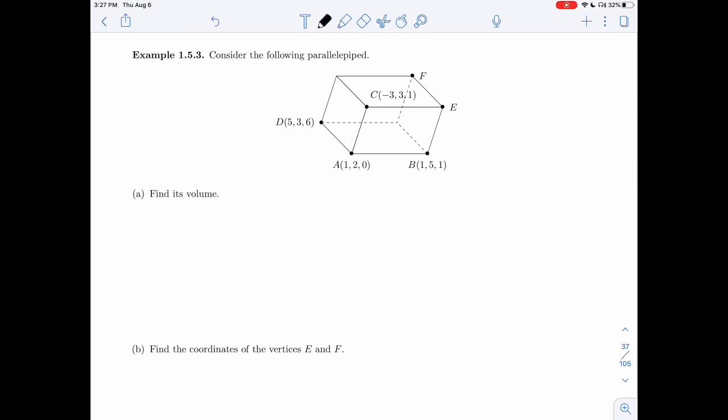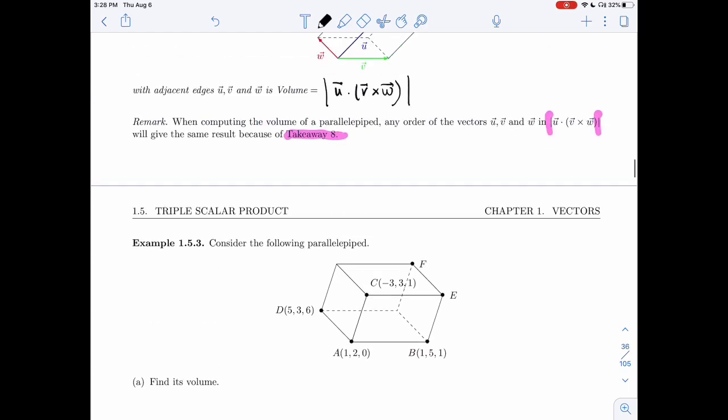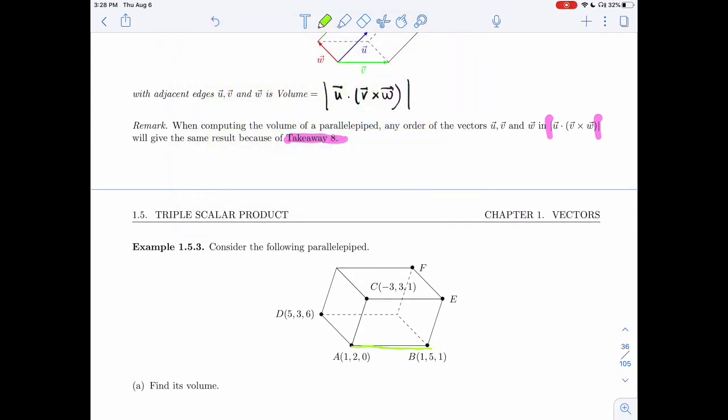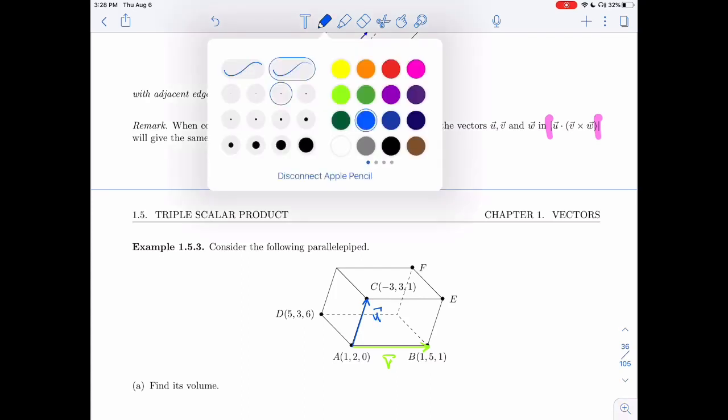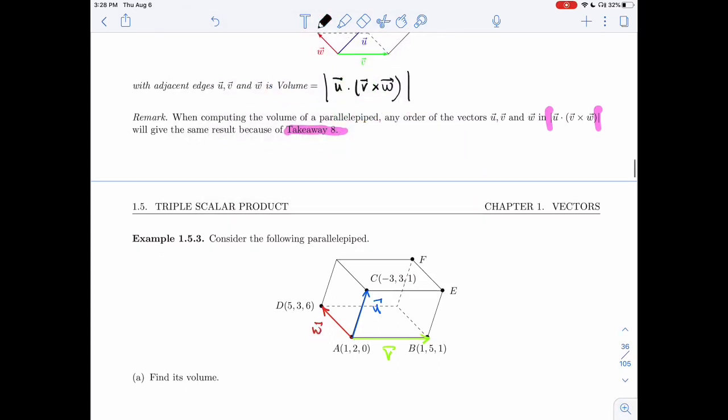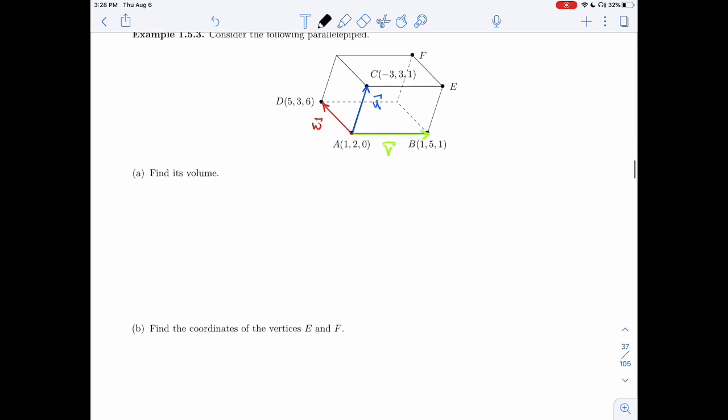Alright, so let's try this example. In example 1.5.3, we're asked to consider the following parallelepiped, and then we need to find its volume. And I have V and W. Alright, so let me use the same notation I had over here. I have V, I have U, and I have W. So I need to find these vectors and then compute their triple scalar product.